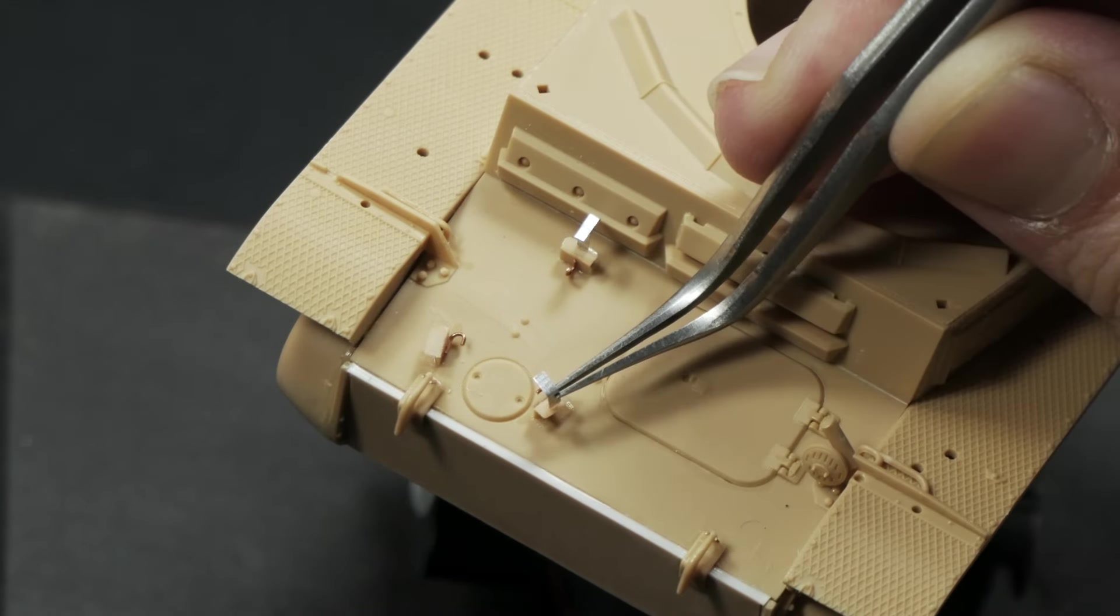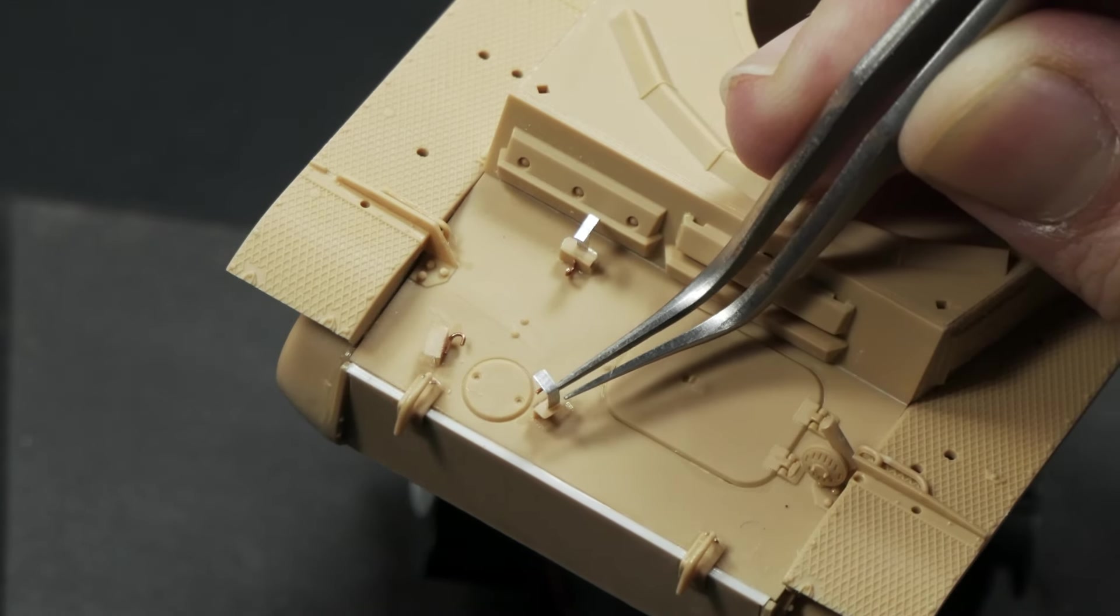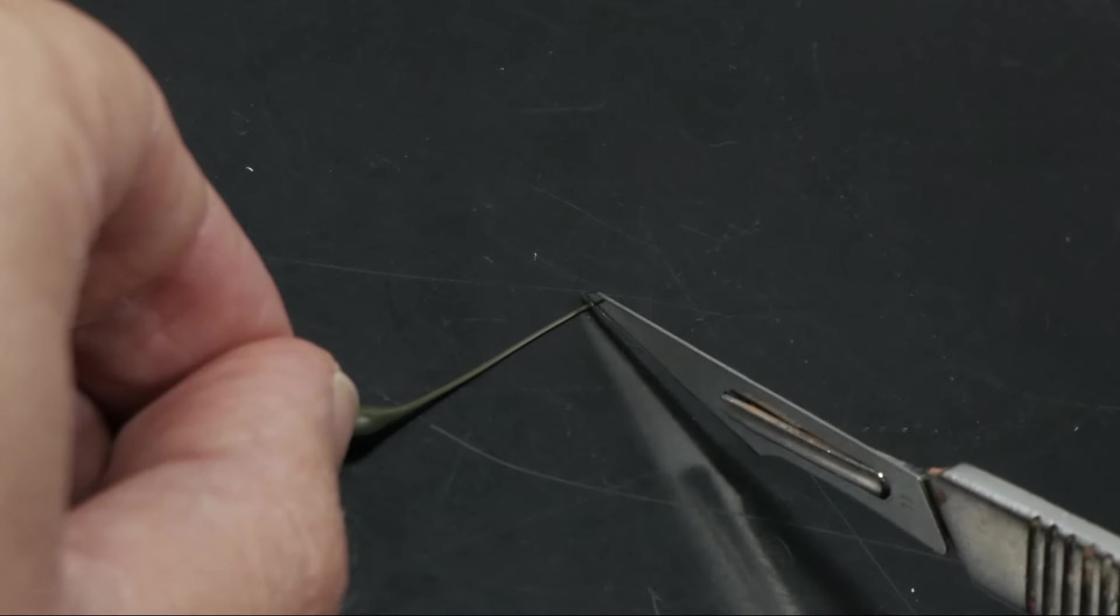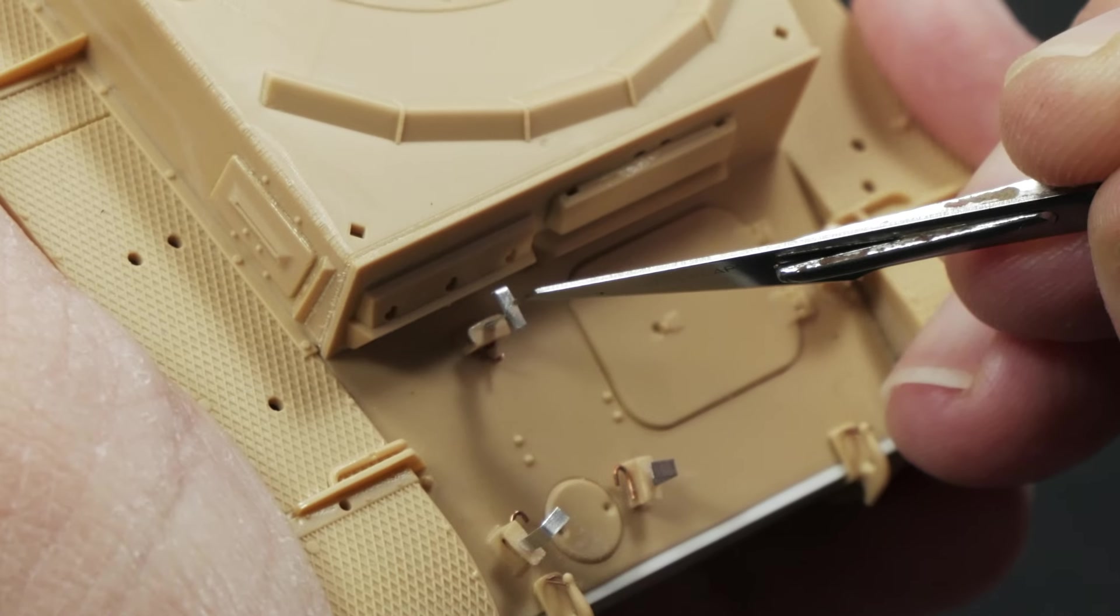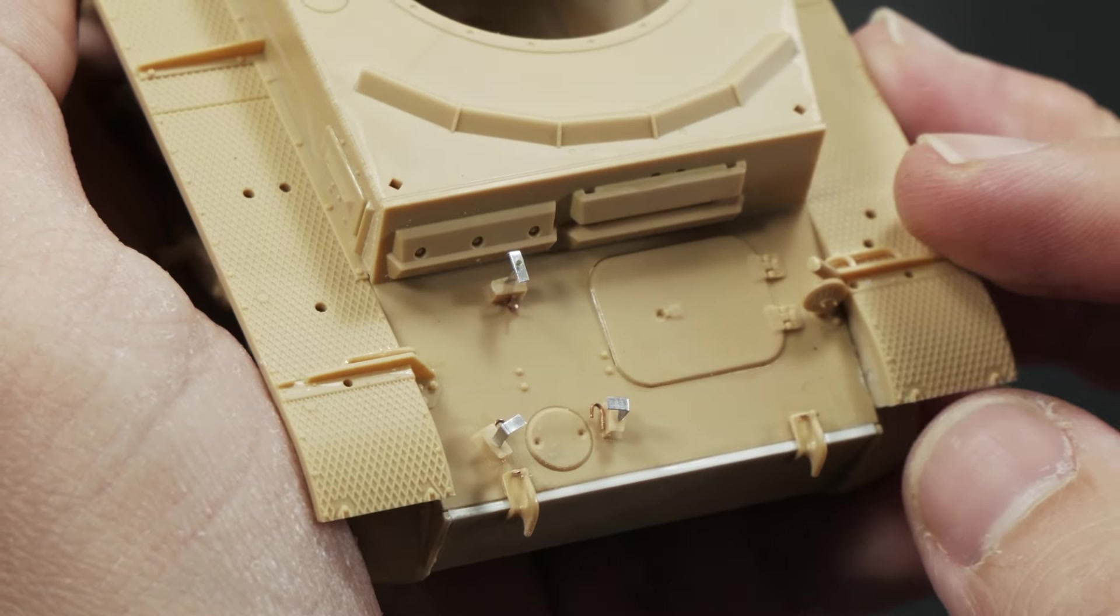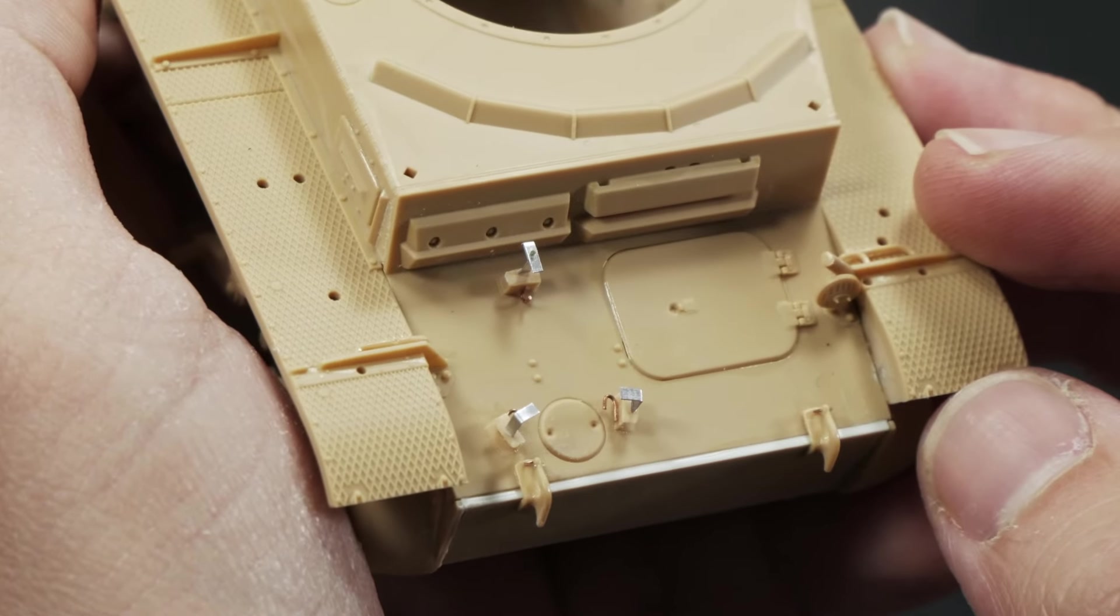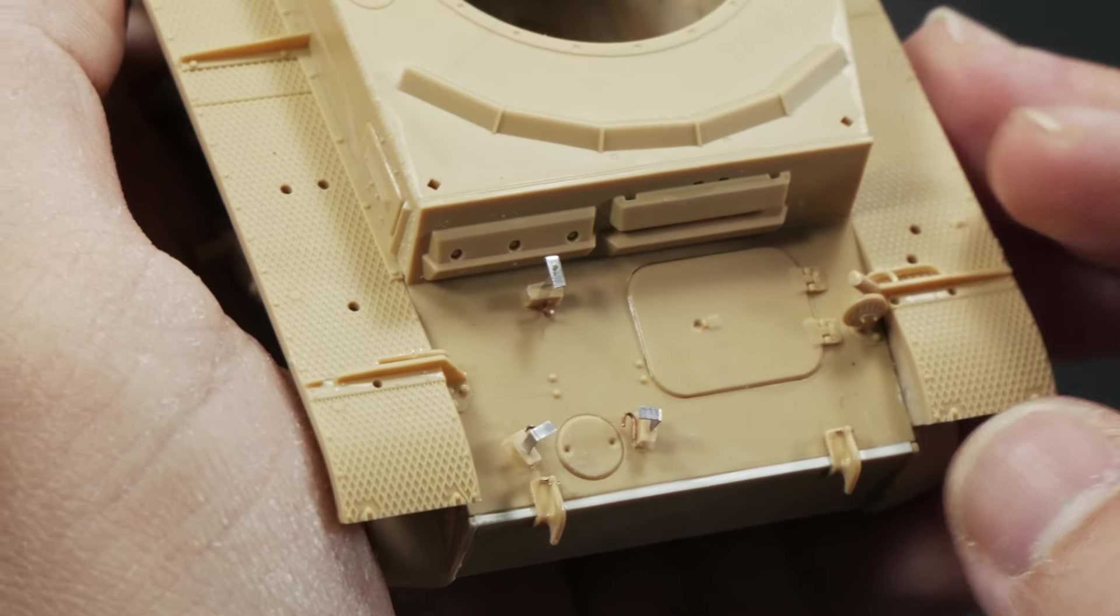Later, using some metal foil and copying the measures from the original parts from the kit, I replicated the clamps for holding the wheel. When completed, I was so happy with the result that I decided to not use the spare wheel this time, so all these details could be seen much better.